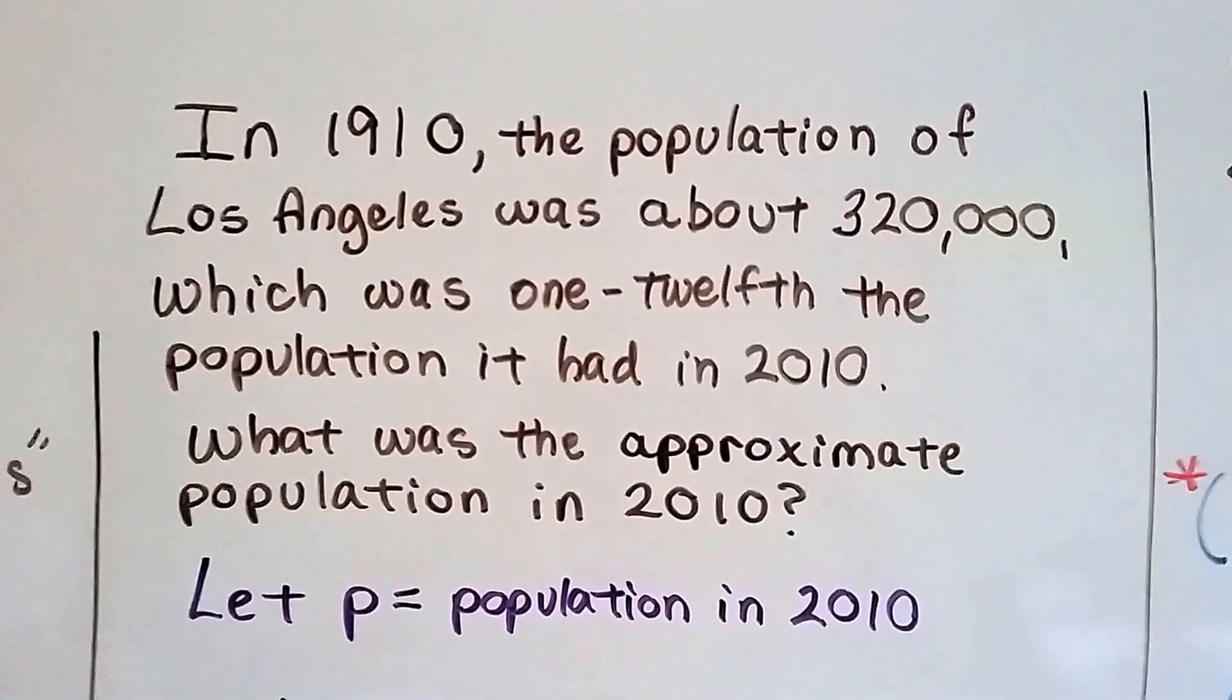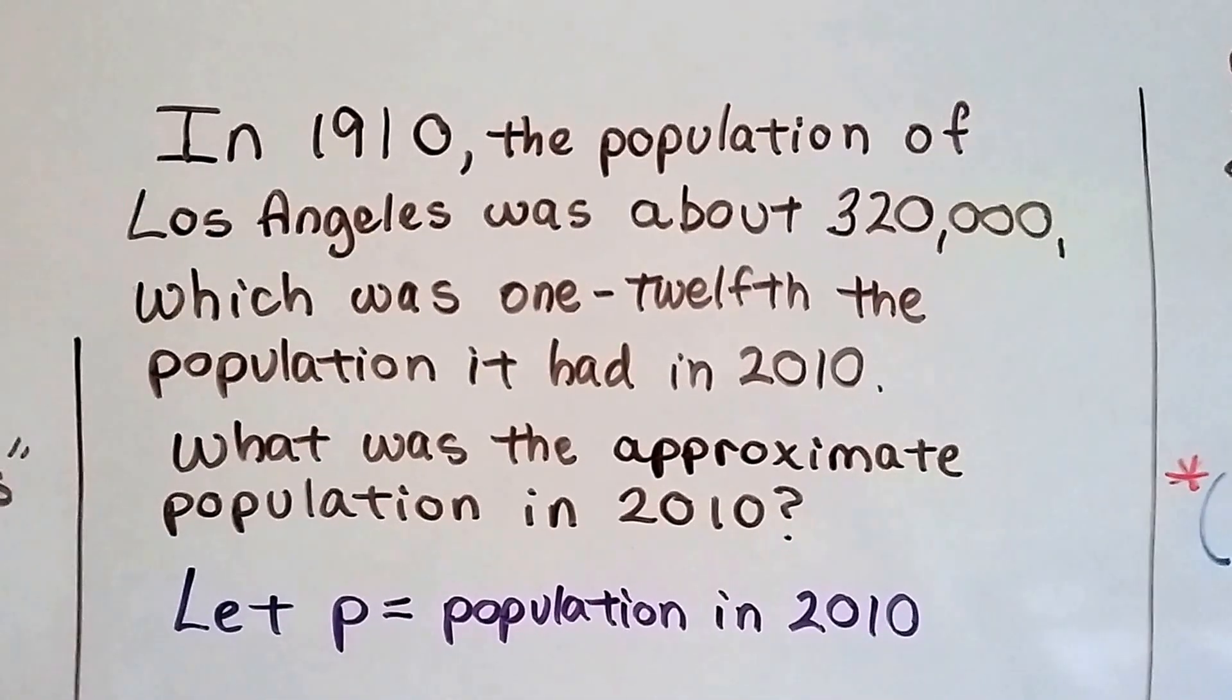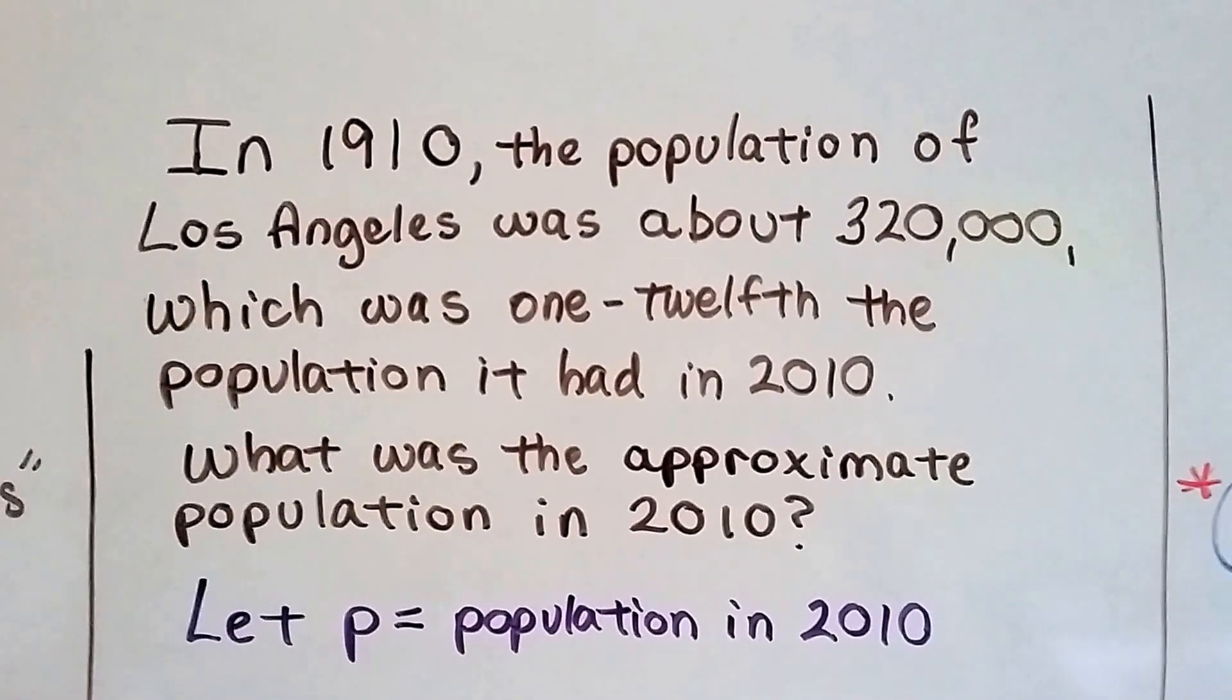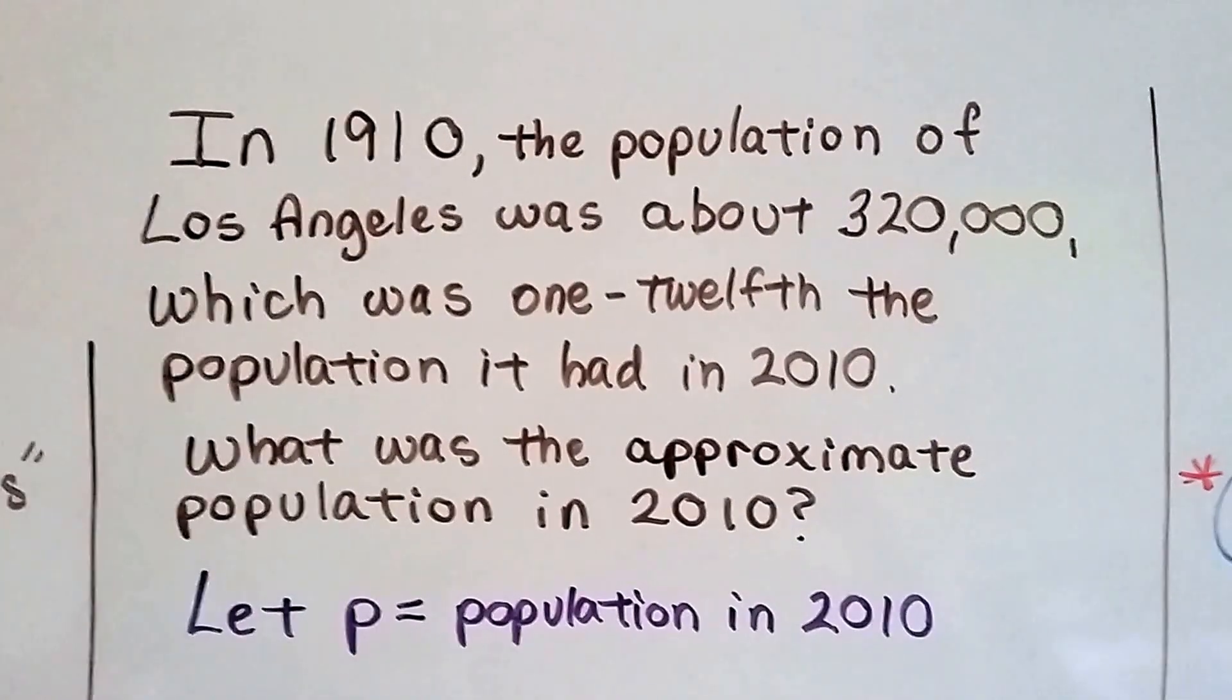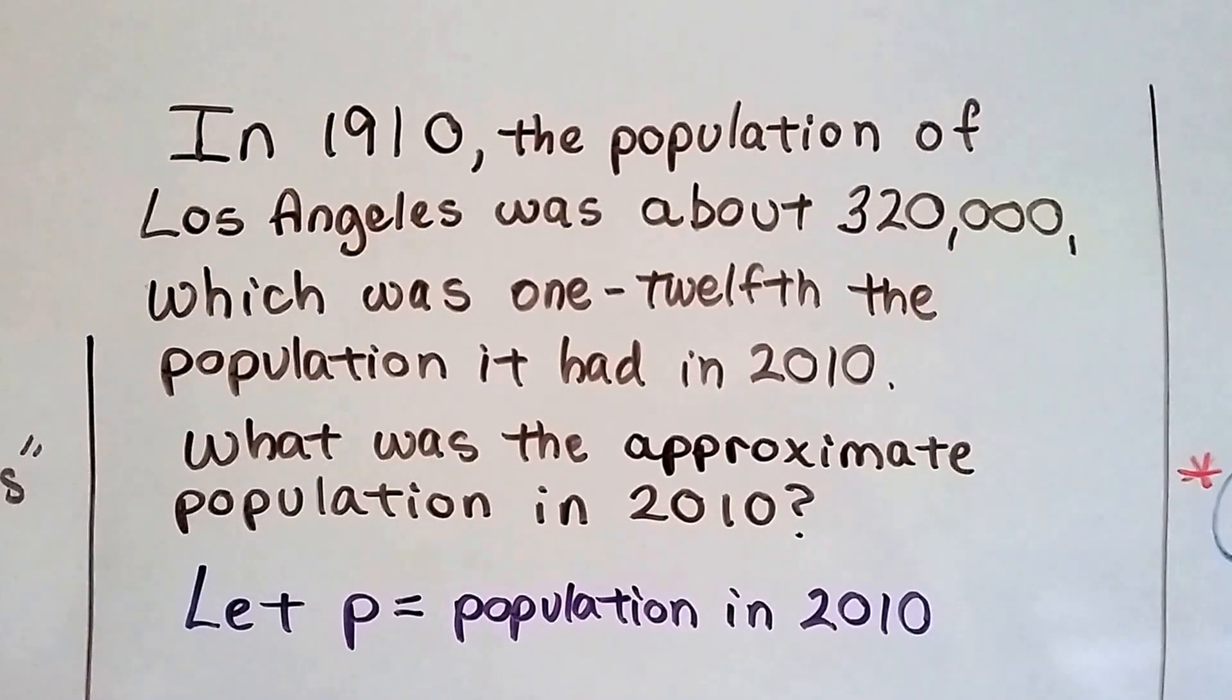In 1910, the population of Los Angeles was about 320,000, which was one-twelfth the population it had in the year 2010. So what was the approximate population in 2010?